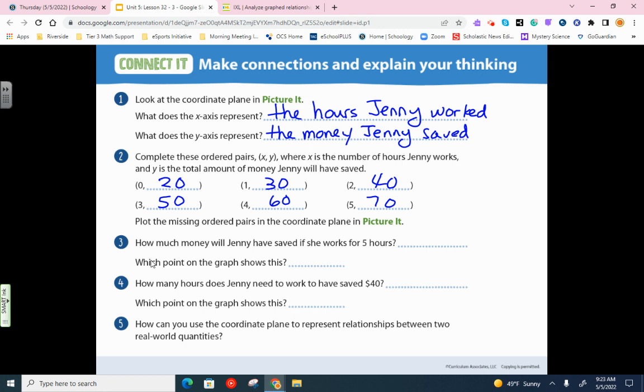And we plot these missing. We already did this, so you don't have to worry about doing that. How much money will Jenny have saved if she works for five hours? She will have $70. Which point in the graph shows this? 5, $70. How many hours does Jenny need to work to save $40? So we do this the opposite way. Check your hours and see where it lines up at 40. And it lines up at 2, 40.